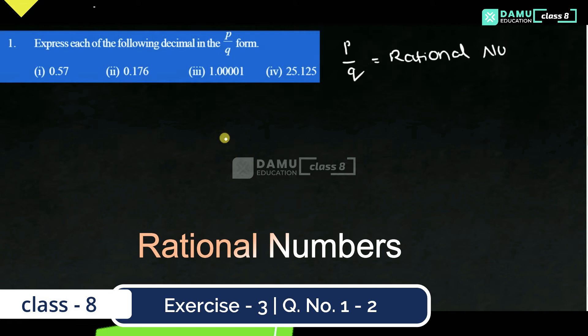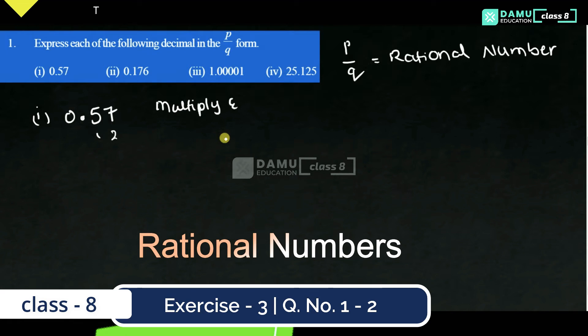In rational number format, after the decimal point, how many decimals are there? 1, 2. That means we have to multiply and divide with 100.